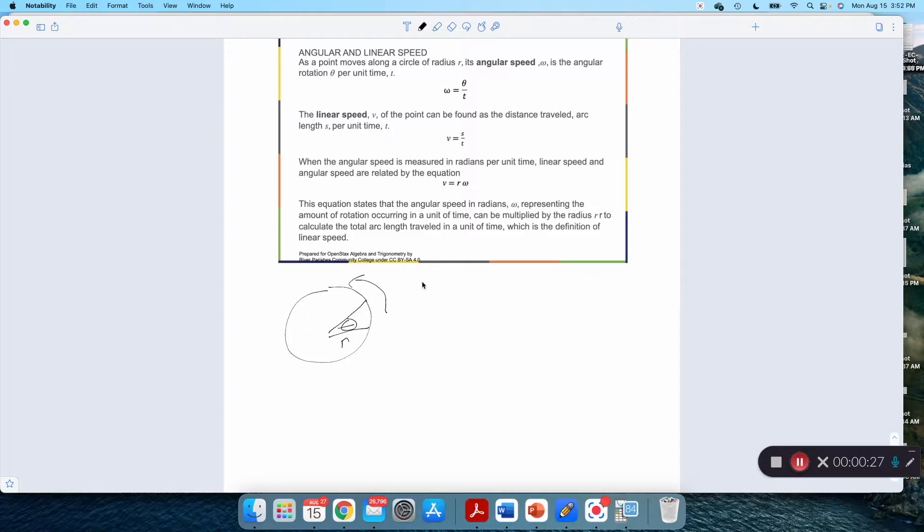We could define this guy omega as the change in theta per change in time. The book writes it as theta over t. I like to think more of it as change in theta per unit time. It's how quickly something is rotating. So this is angular speed or angular velocity.